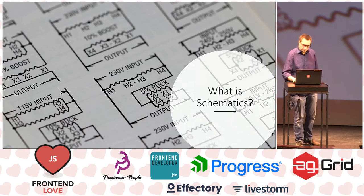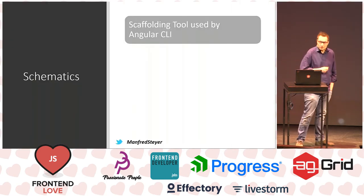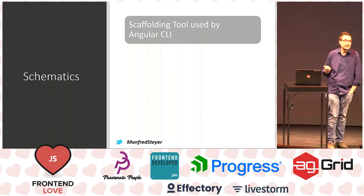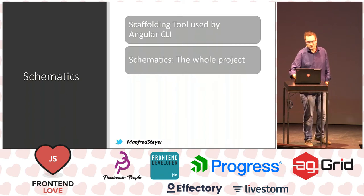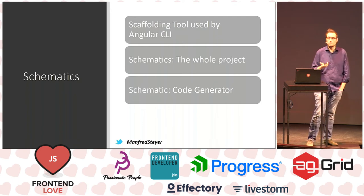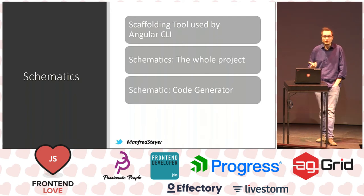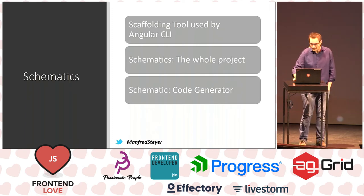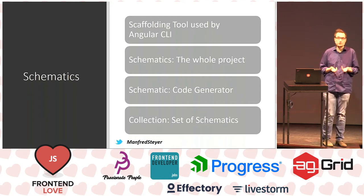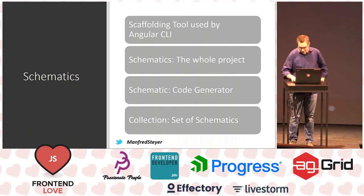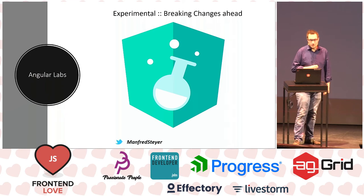Let's talk about what schematics is. When it comes to schematics, as mentioned, you have the scaffolding tool used by the CLI itself. Schematics is the name of both the whole project as well as the code generators produced with this project — so when you are writing a code generator, it is also called a schematic. There is another useful term: a 'collection' is just a set of code generators, a set of schematics. One word of caution: schematics is currently an Angular Labs project, which means it is experimental and there are breaking changes ahead.